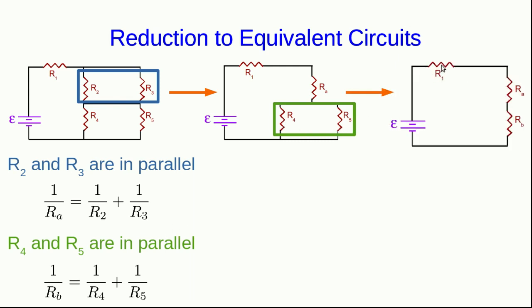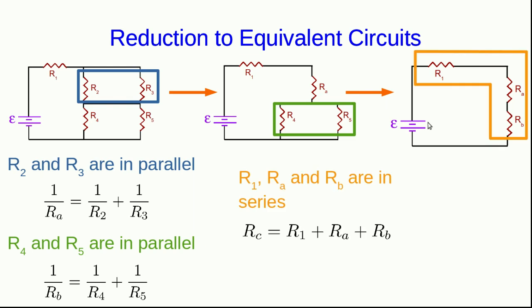Now we can do the same thing with R4 and R5, because they are also in parallel, and we've now simplified to a circuit that looks like this. The most efficient thing to do at this point would probably be just to write the loop law for this circuit, but we could also reduce still further by realizing that R1, Ra, and Rb are in series, and so we can combine them using this rule to get a final, simplest form of our circuit.